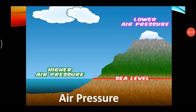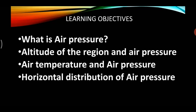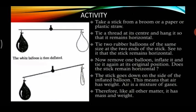Dear students, hope you are all well. Today we will begin with a chapter in geography. The name of the chapter is Air Pressure. Our learning objectives for today will be: what is air pressure, the relationship between altitude of the region and air pressure, the relationship between air temperature and air pressure, and the horizontal distribution of air pressure.